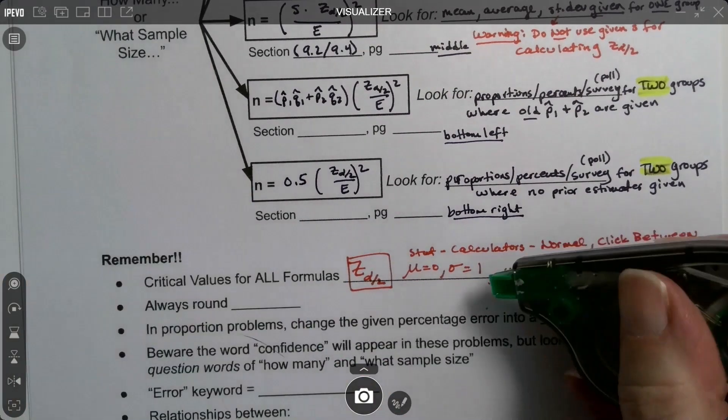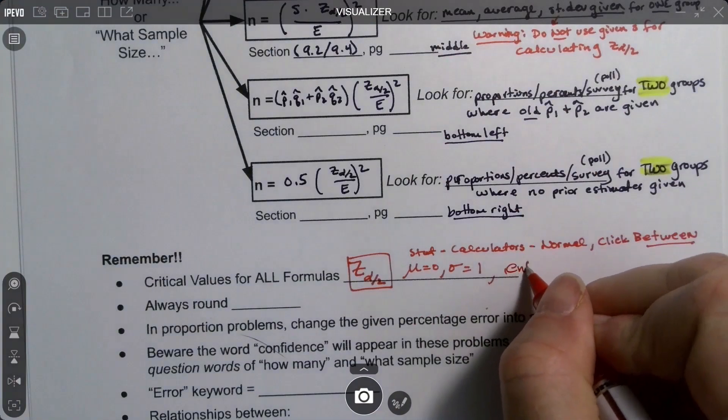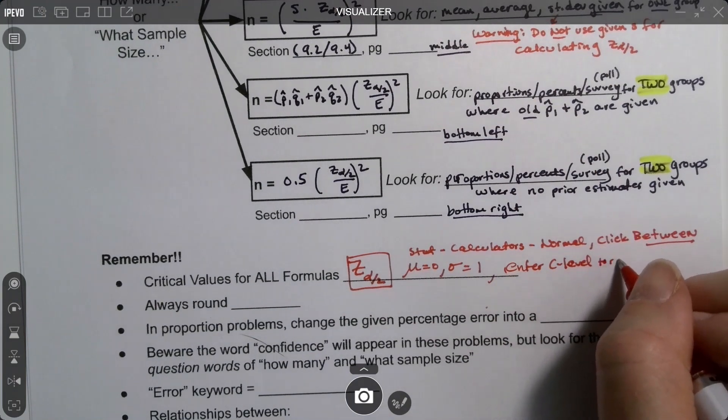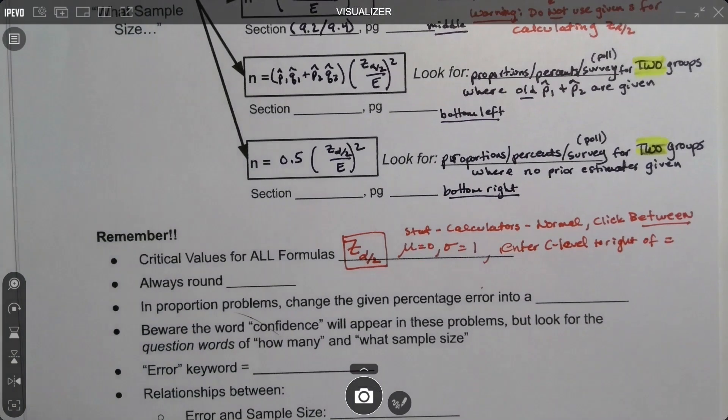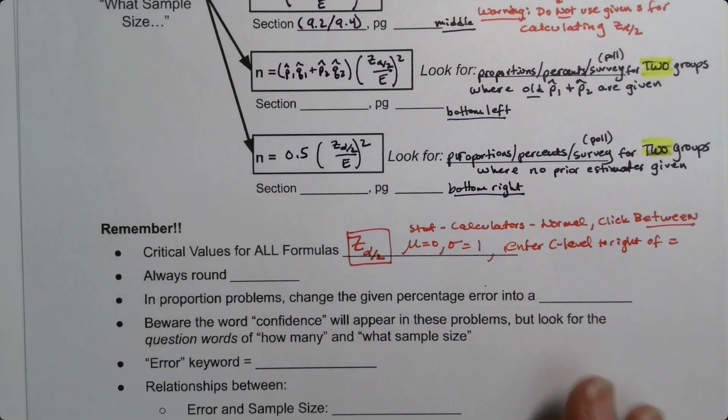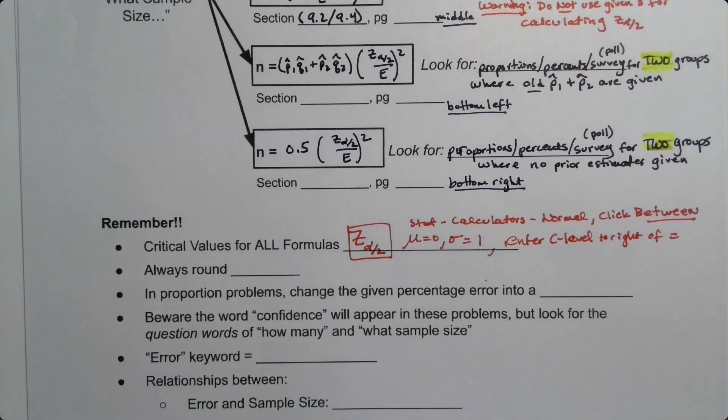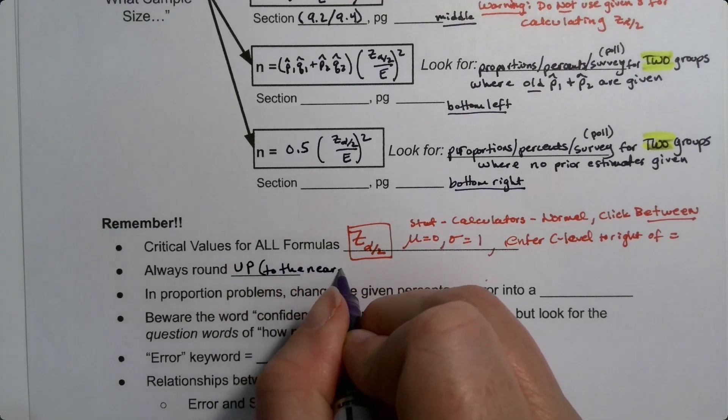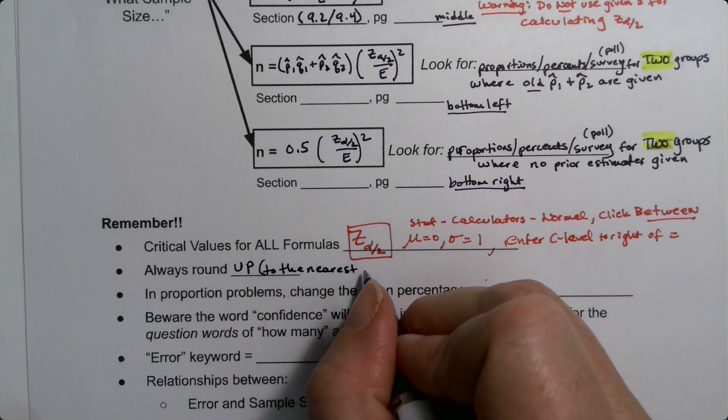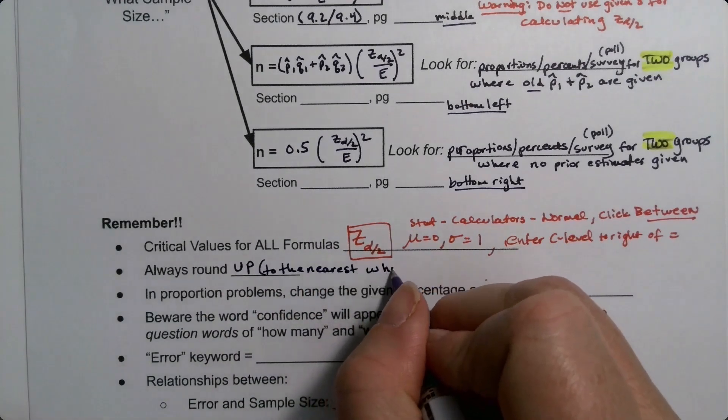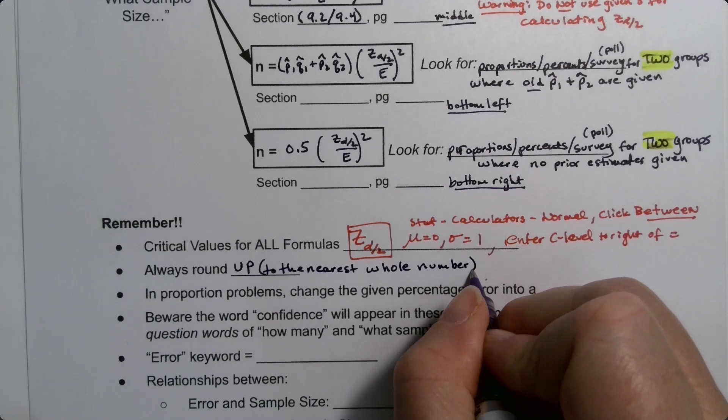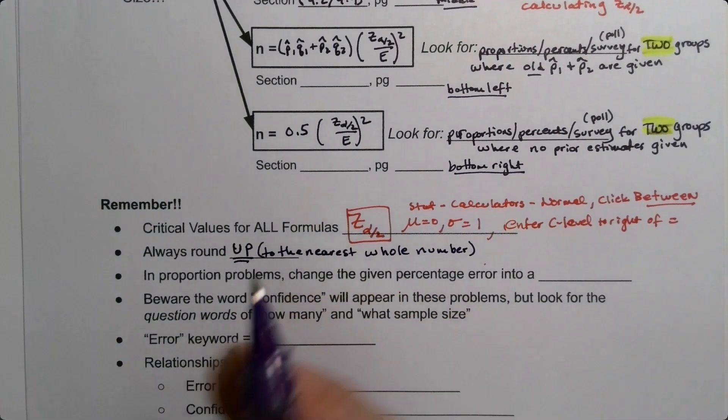I'll just make a note. Enter C-level to the right of the equal sign. Next, these sample size problems in general are weird because we always round up to the nearest whole number. The rest of the course, literally every other problem, we do regular rounding. Five and higher goes up, four and lower stays the same, and you just cut off all the decimals. But these ones must go up, no matter what.